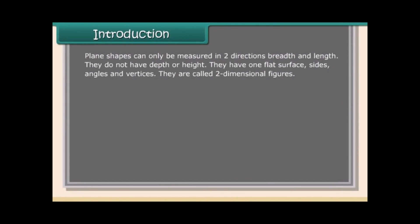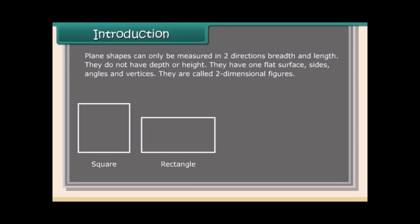Plane shapes can only be measured in two directions: breadth and length. They do not have depth or height. They have one flat surface, sides, angles, and vertices. They are called two-dimensional figures, such as square, rectangle, circle, and triangle.